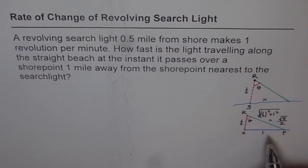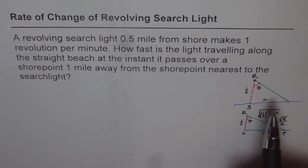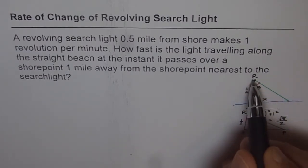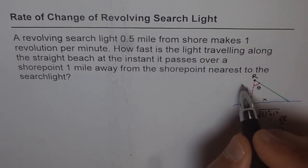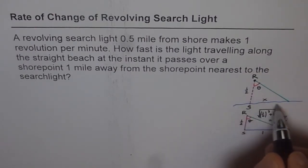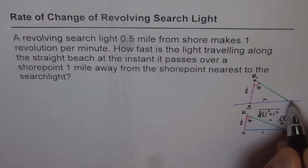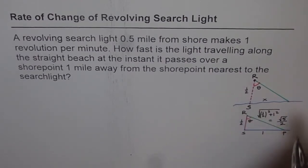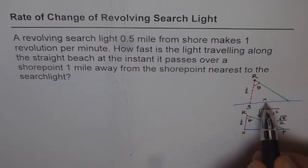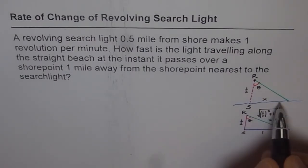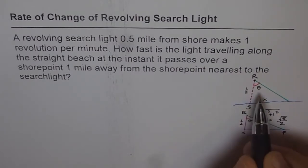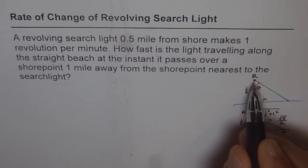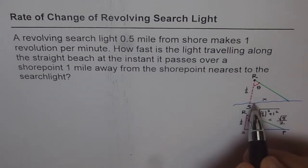In general, the searchlight is revolving and hitting the shore, moving along the shoreline. Let x be the distance along the shoreline which the searchlight beam covers, and theta be the angle with the perpendicular, as shown in the diagram.